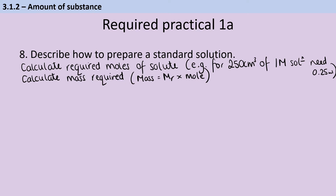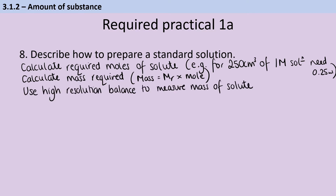Once you know the mass to add, you measure it out using a high resolution balance, getting as close as humanly possible. You should use the before-and-after weighing method: measure the mass of a weighing bottle, then add your solute to it off the balance to avoid spilling any on the balance. Measure the mass of the weighing bottle with the solute, then empty it and measure the weighing bottle again — that way you know exactly how much solute you've actually added.